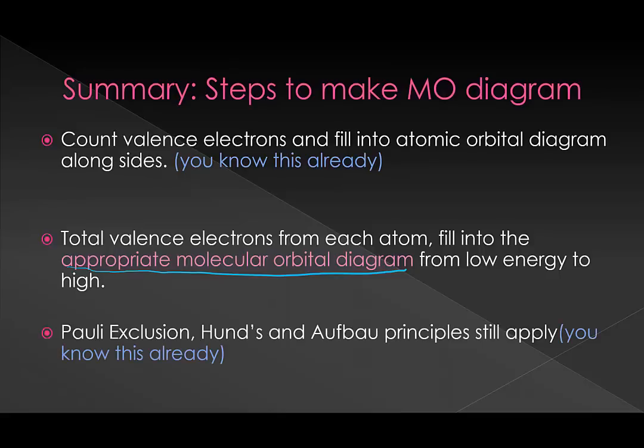Right now, as far as that goes, we just have the one. But we're going to be making this more complicated as we go into more videos. As you fill, remember that Pauli exclusion, Hund's, and Aufbau principles still apply. Nothing new here either. Two electrons per orbital, one spin up, one spin down. When we get there, although we're not there yet, if you have degenerate energy levels or energy levels that are the same, you fill across first before you double them up. We'll get to that in the next video.